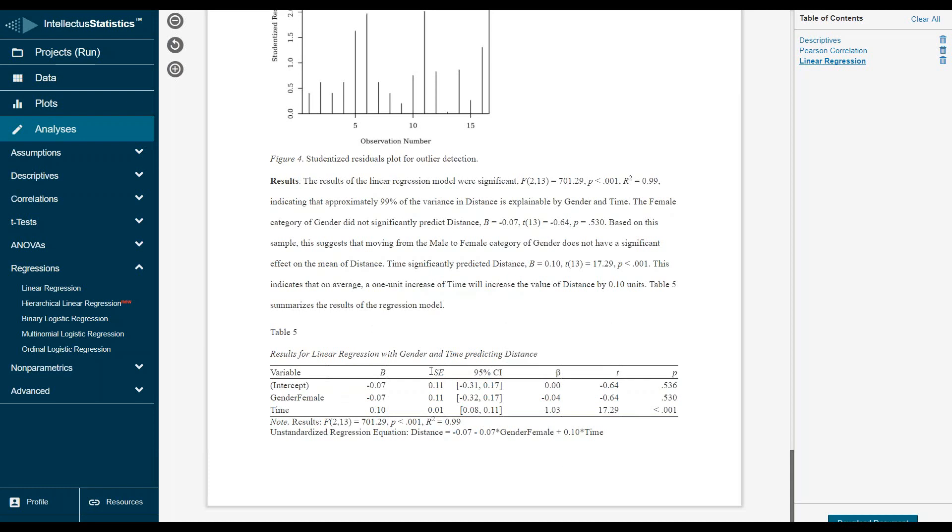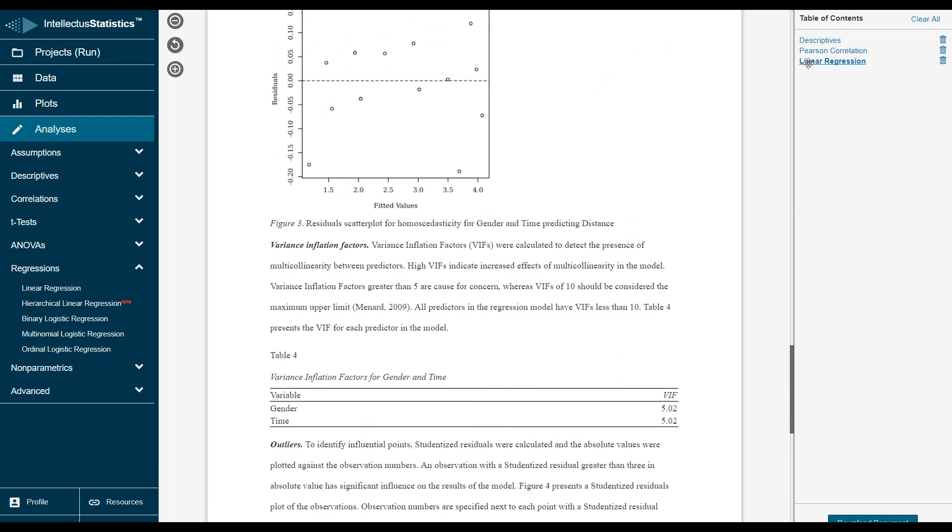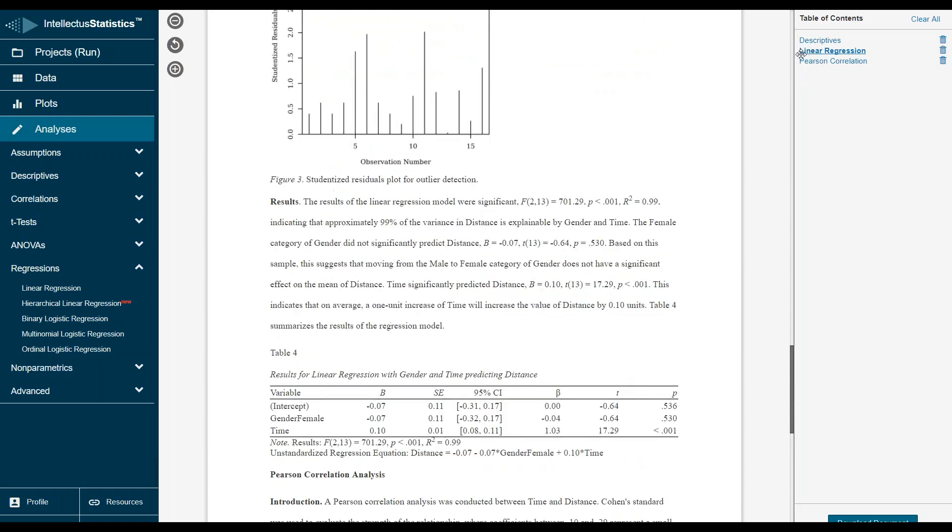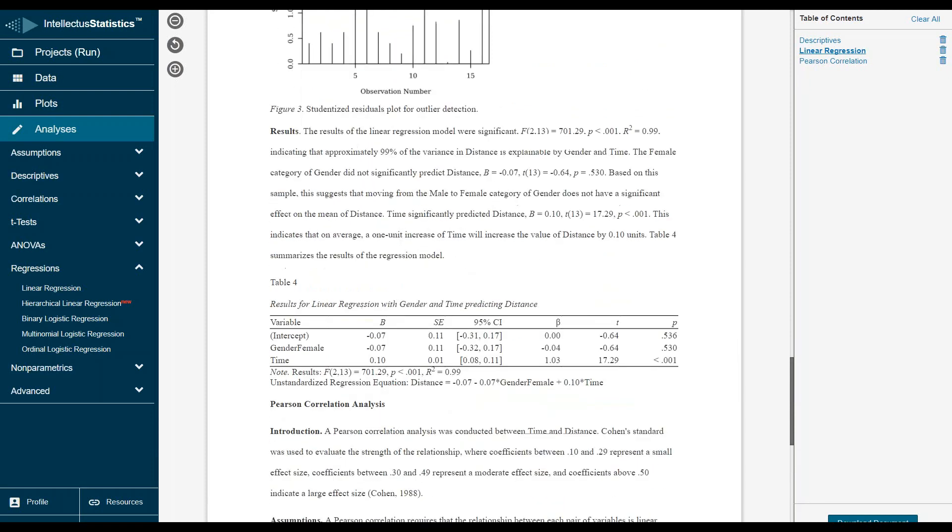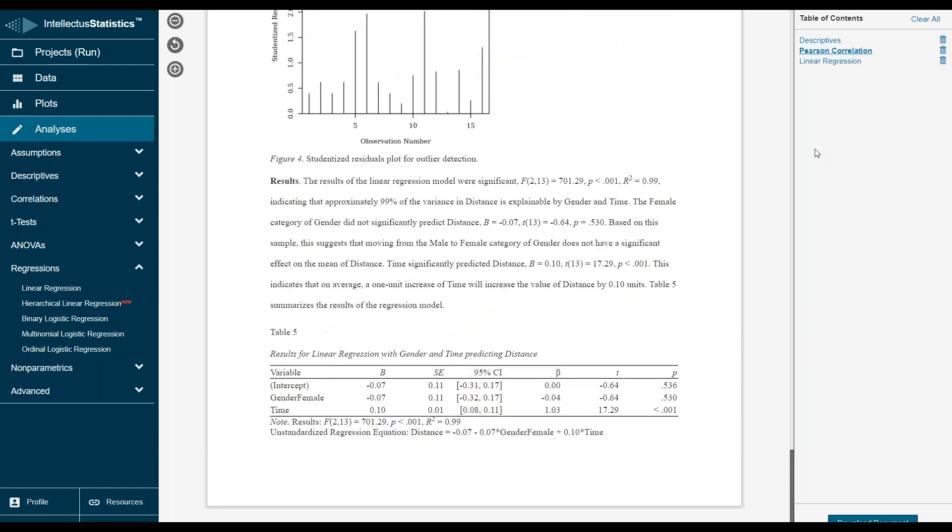Also in addition to the APA table, there's an unstandardized regression equation, so if you want to plug in whether you're male or female and the time, you would get the distance. All these have scroll-overs as well to help remind people what they are. After you've conducted, say you wanted the regression first, you can move it up here and it will resort the table numbers and the figure numbers. Then we simply download the document, click on download or upload.